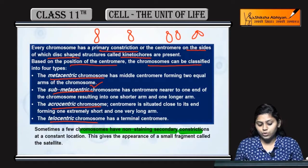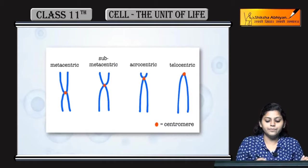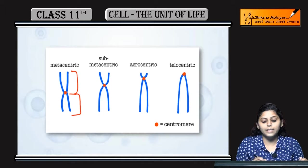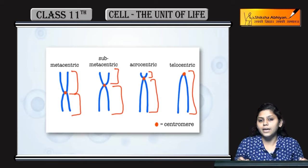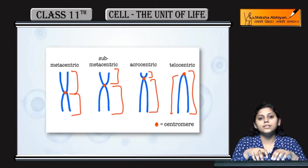Sometimes a few chromosomes have non-staining secondary constrictions at constant locations, jo appearance dete hain like a small fragment, jinhe satellite kehte hain. Metacentric mein dono arms almost equal hain. Submetacentric mein ek arm choti aur ek badi hai. Acrocentric mein ek arm bahut choti aur ek bahut badi hai. Telocentric mein terminal position pe centromere hai aur arms bahut badi hain sirf ek side ki.